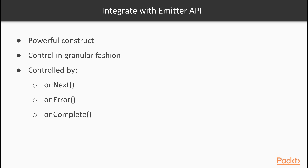Let's now integrate with the Emitter API. The Emitter interface is a much more powerful construct, because it allows you to control the way items will be emitted into the observable in a very granular fashion. Basically, the observable will be controlled by three methods.